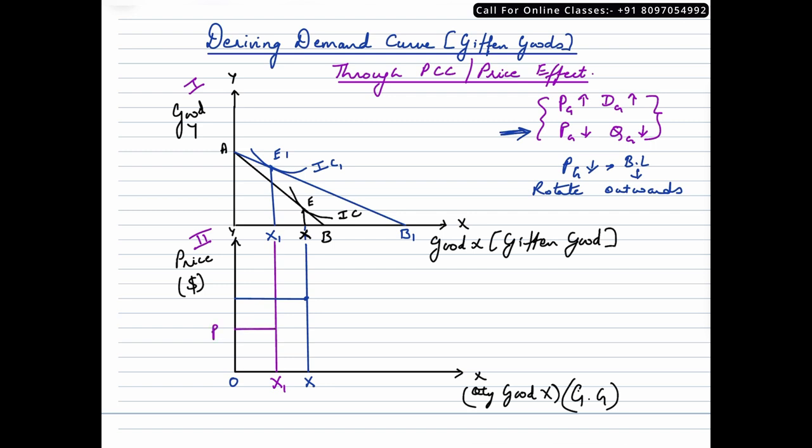So this is P1 and initial price is P. Now when we join these pointers E and E1, we get a PCC curve. In the lower panel or the second panel, we get a demand curve which is an upward sloping demand curve. This demand curve is an upward sloping demand curve indicating a positive relationship.